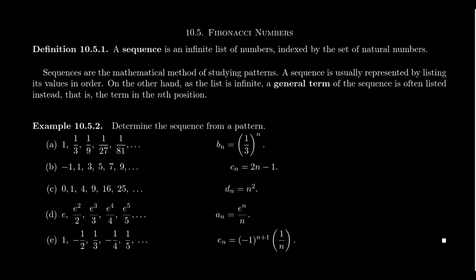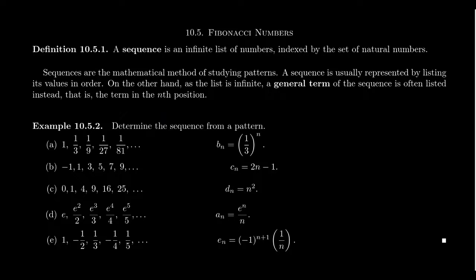There are basically two ways that one typically describes a sequence. After all, a sequence captures the mathematics of a pattern — a pattern is established, and we want to describe and study that pattern. The two ways we typically describe a sequence are: first, we have a general term — that is, a formula for the nth position of the sequence. Let me offer you a few examples here.